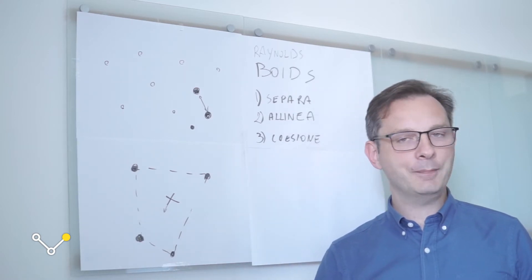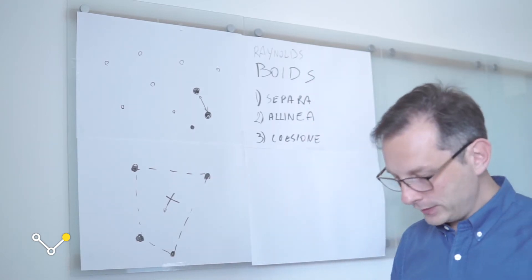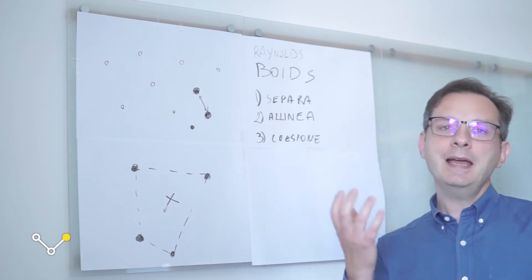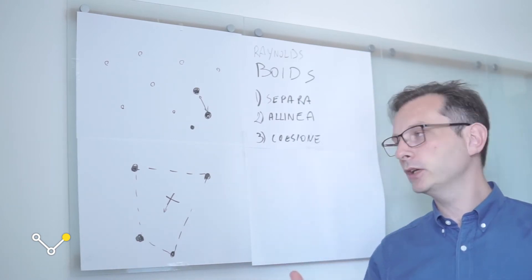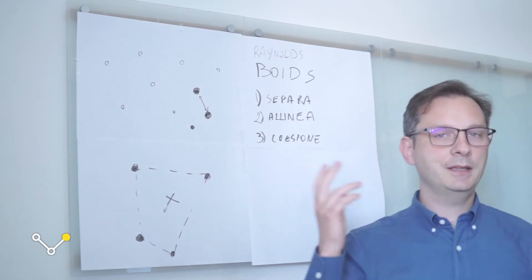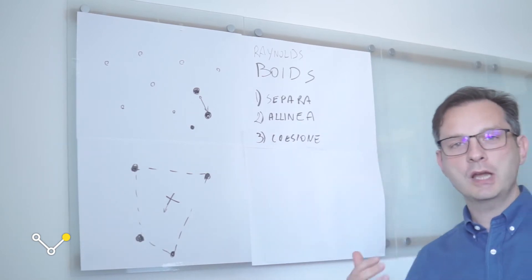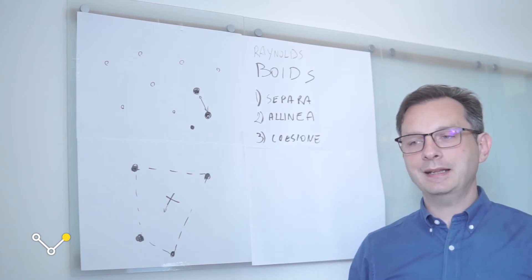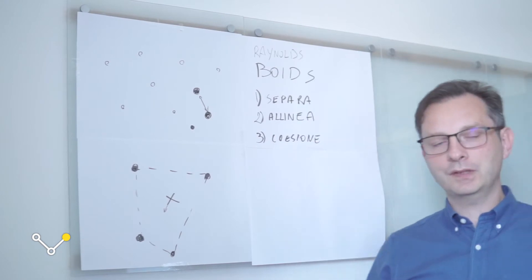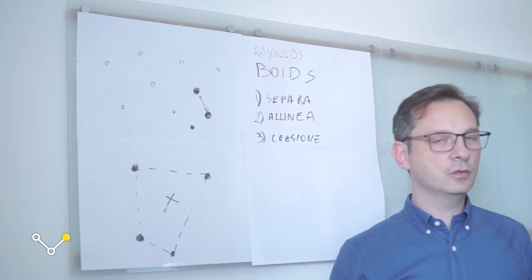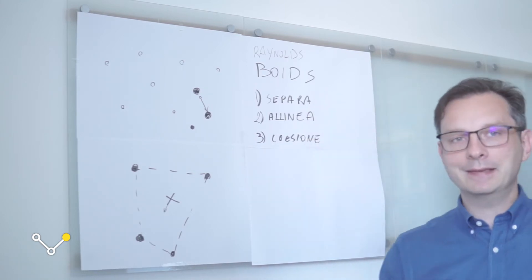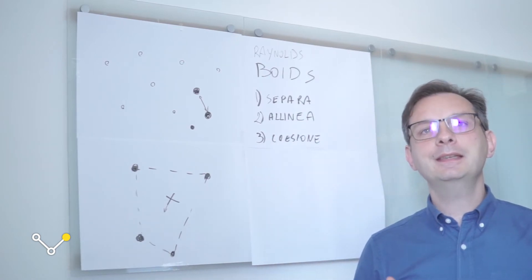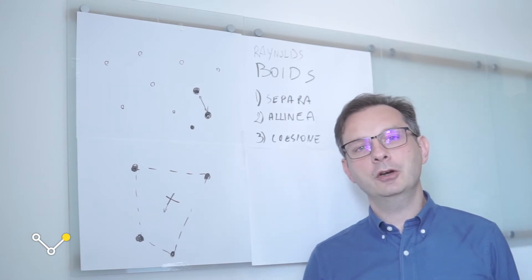Sarà sufficiente questo per spiegare il comportamento degli stormi di uccelli, le evoluzioni che abbiamo visto nel video precedente? Come ha potuto Reynolds verificare la propria ipotesi? La verifica è avvenuta tramite una simulazione nel calcolatore. L'idea chiave è stata quella di introdurre una simulazione multiagente in cui ogni agente conosce esattamente quello che conoscerebbe un uccello all'interno dello stormo, e viene programmato per reagire alle nuove situazioni secondo queste tre caratteristiche. L'algoritmo di base di Reynolds è stato poi esteso per introdurre la presenza di un predatore o di un ostacolo durante il volo.